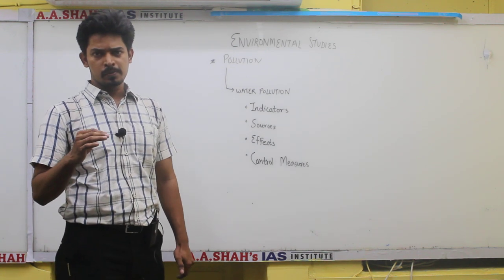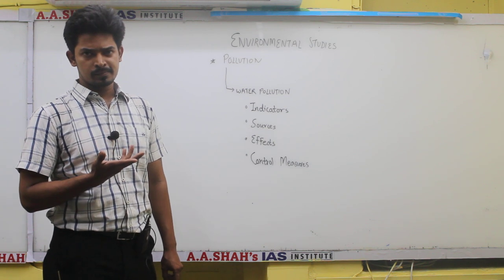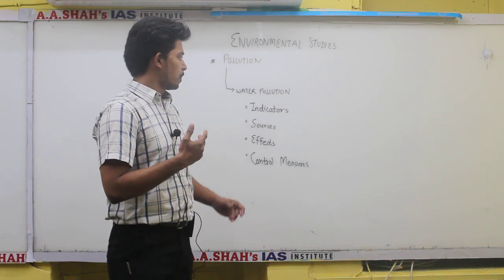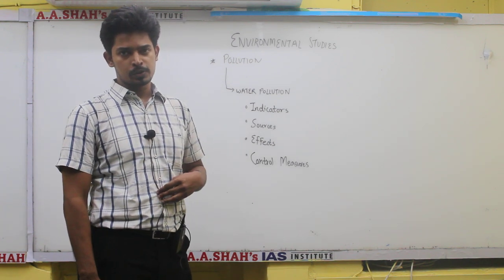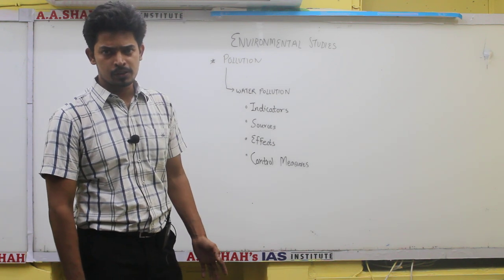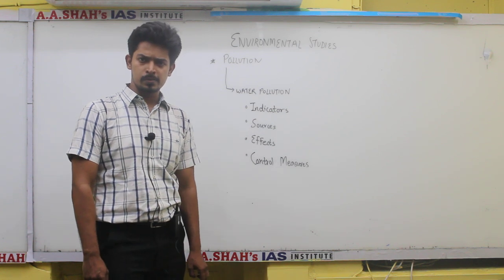In environmental pollution there are different types. Most of the types are air pollution, water pollution, noise pollution, radiation pollution, soil pollution, solid waste pollution etc.